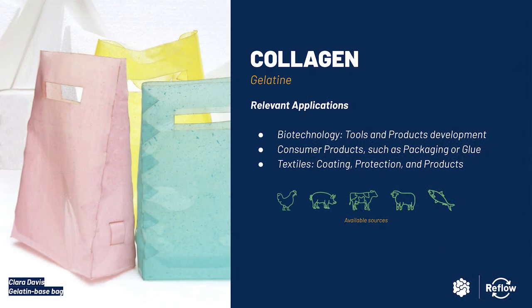Another abundant biopolymer in city waste is collagen — one of the main structural proteins of animal tissues and the most abundant in the animal kingdom. Gelatin is extracted from collagen, which is a hydrocolloid, a substance that produces gel on contact with water, which in the case of gelatin is reversible. Collagen is used today in the food and biotechnology industry, besides being used for packaging, glues and textiles applications.